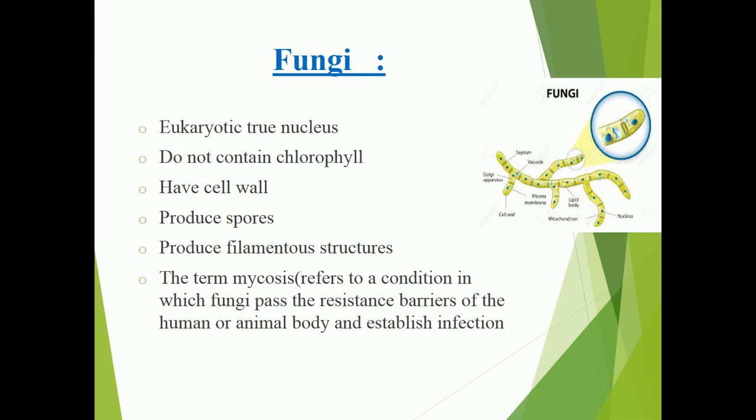Fungi are eukaryotic organisms. You can see in the diagram the cell wall — called geoplasia — septum, vacuole, plasma membrane, lipid body, mitochondria, and nucleus. There is no chlorophyll present in fungi, but they have a cell wall and the capability to reproduce by spores.